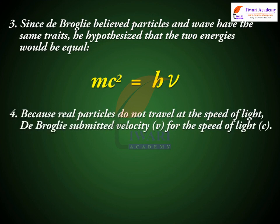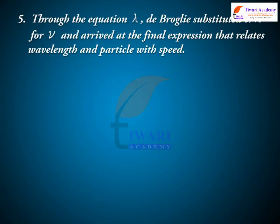Step 4: Because real particles do not travel at the speed of light, De Broglie substituted velocity v for the speed of light c, giving mv² = hν.